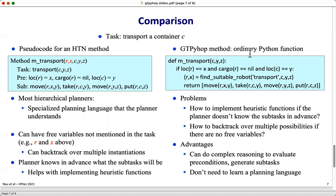In the case of GTPyHop, the method is implemented as an ordinary Python function. One problem with that is the planner doesn't know what the subtasks are in advance because they're embedded in the Python code, so how are you going to reason about those subtasks in order to implement heuristic functions? We think we may have some ways to do that, but we're not sure yet.